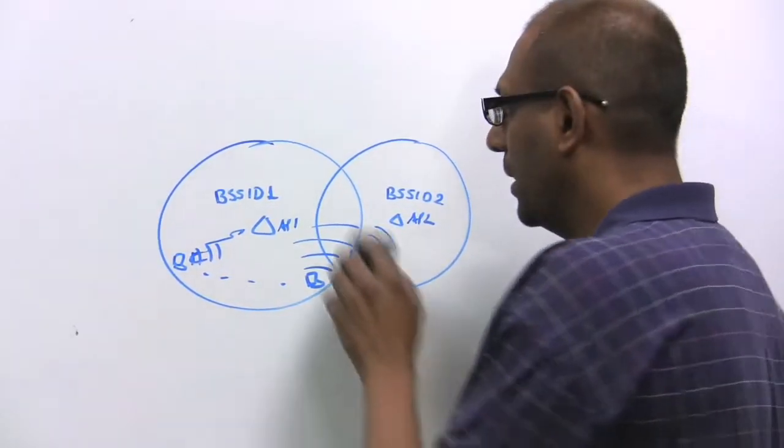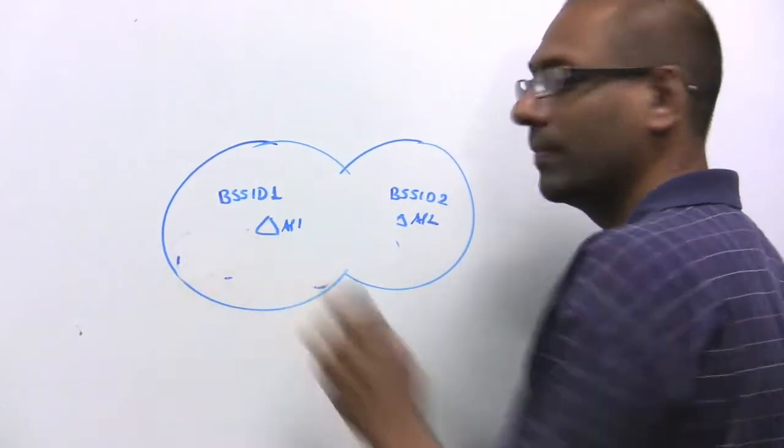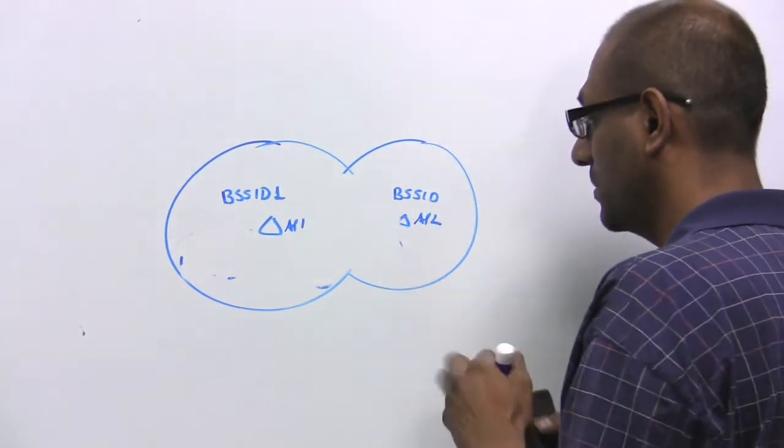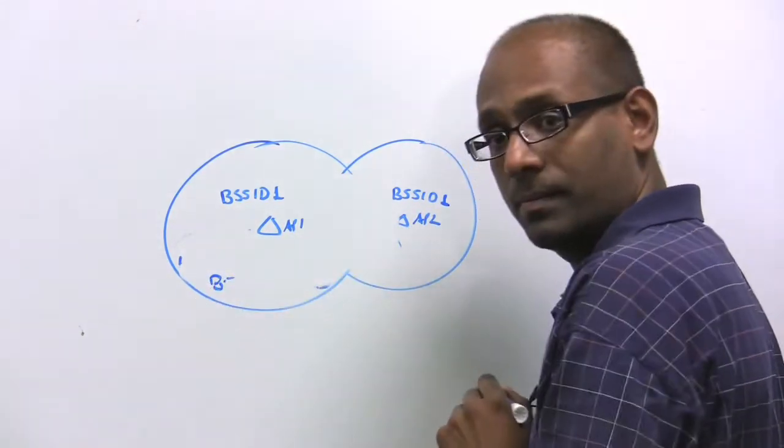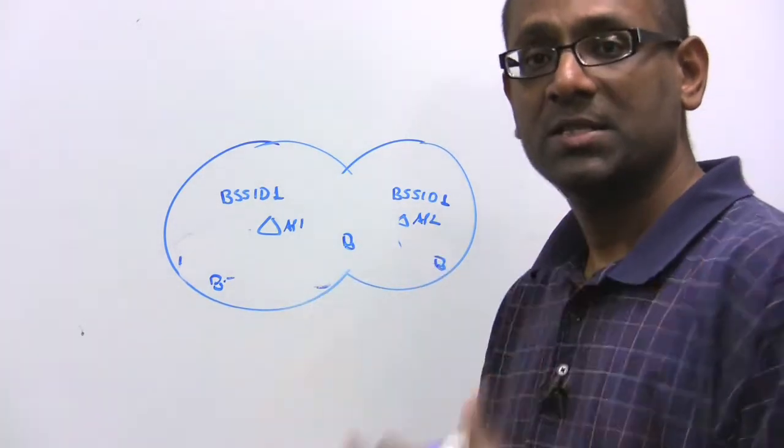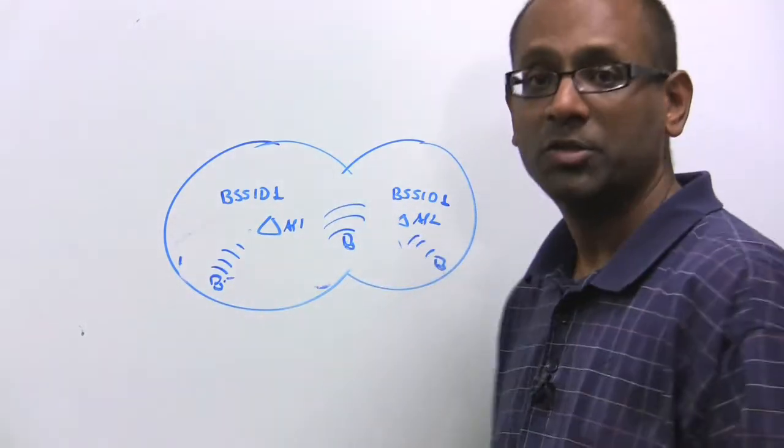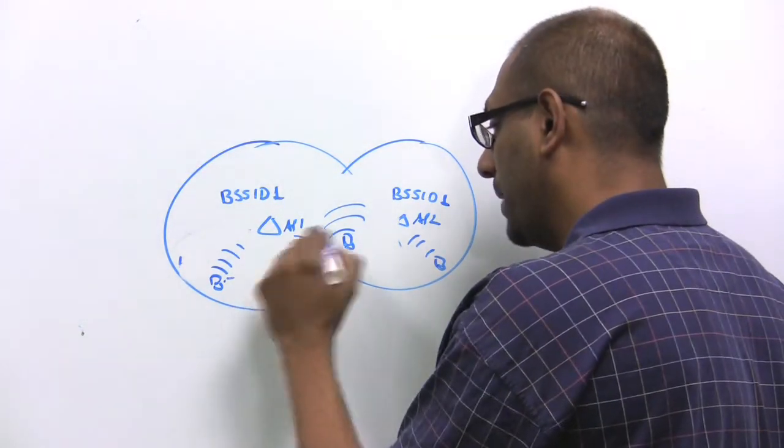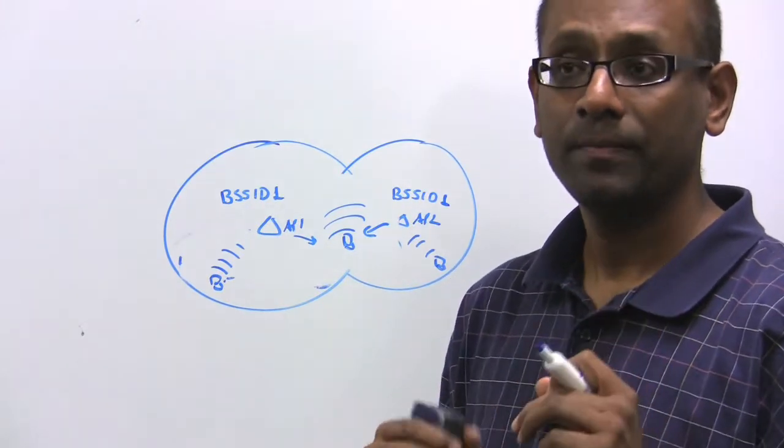Well, there is one way of doing it. Let's take both these cells, and let's make them advertise the same BSSID, or wireless MAC address. Now, whether the client is here, or here, or here, when it seeks the presence of access points, what does it hear? It hears only BSSID 1. Whether there's a single AP responding to it, or multiple APs responding to it, they all respond with the same wireless MAC address, the same BSSID.